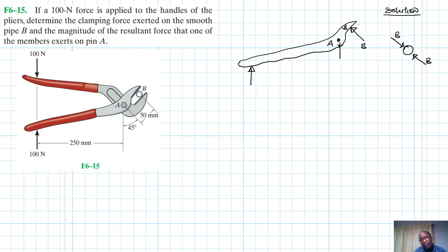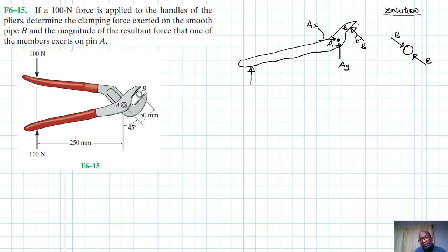At point A we expect two force components: one we're calling Ay and one we're calling Ax. We've been told the angle here at B is 45 degrees. We need these components later on for B. So we'll have: one component is B, and the other is B cos 45. Then we'll have another component which is B sine 45.